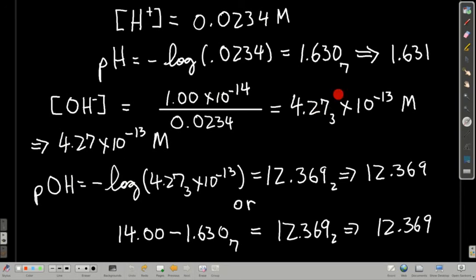In this case, 4.27 times 10 to the minus 13th molar. Once you know that guy, it's real easy to get the pOH, just negative log base 10 of the concentration of hydroxide, which I get 12.369. Note, alternatively, once you knew the pH, you could also find the pOH by taking 14 minus the pH, because remember pH plus pOH is equal to 14.00.